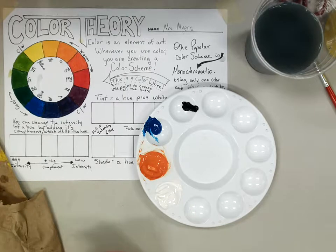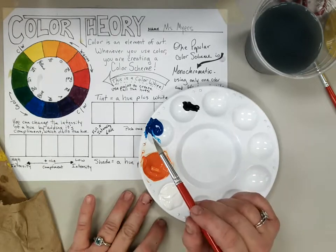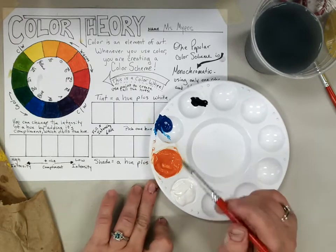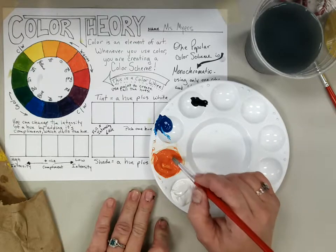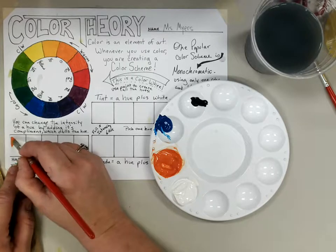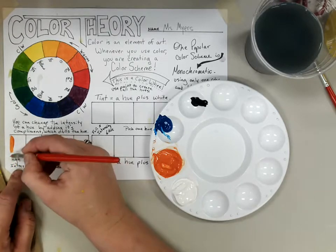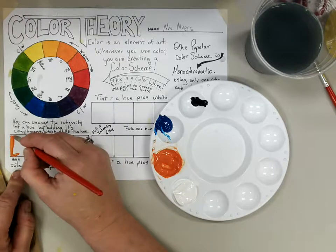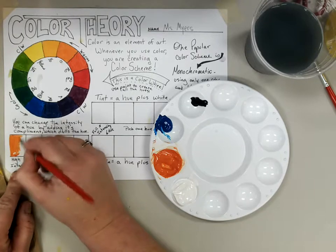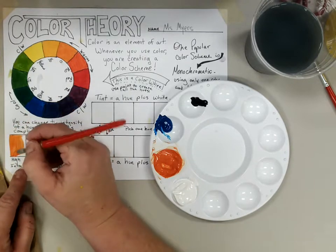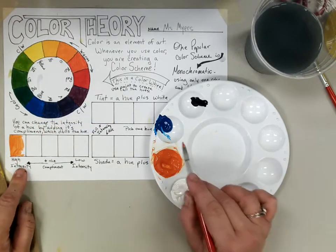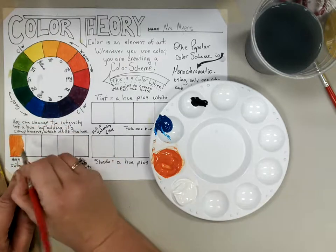I'm going to mix orange with its complement, blue, because they are directly across from each other on the color wheel — they are complements. I'll show you how it goes from a high intensity orange to a much lower intensity color as I add more blue. I'm going to start with straight orange and paint it in this first square on the far left side — our full high intensity color. Nice and vivid.